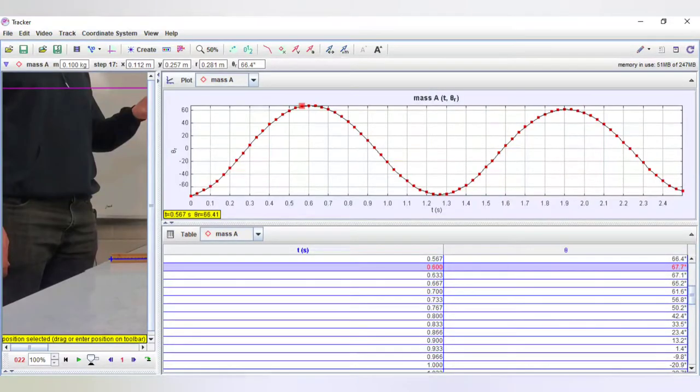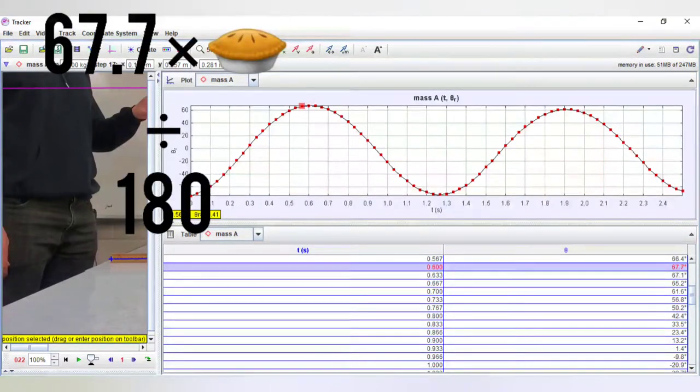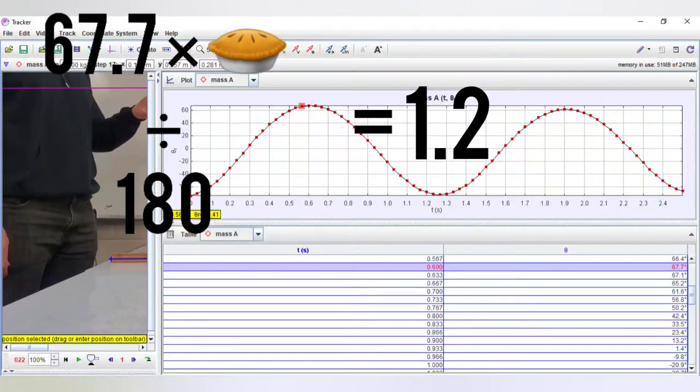Now if we go back to the graph on tracker we see that at 0.6 seconds the angle was 67.7 degrees and to find the radians we multiply 67.7 times pi divided by 180 and it gives us 1.2 radians which is exactly what we saw on the code. And we're done. We got some spot on results with the computer simulation compared to the real world data that we got from tracker and we also learned that if we have an angle instead of position versus time graph we can still find that velocity but it's going to be angular velocity and if we do have that angle we're not looking for a force anymore we're looking for torque and we saw how we can find both of those and plug them into the computer simulation and get the output that we wanted. Thank you for watching and I hope you learned something.